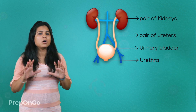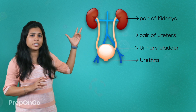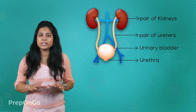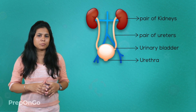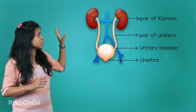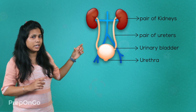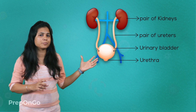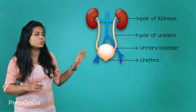First, all waste materials get collected into the pair of kidneys. These kidneys are located in the abdomen, one on either side of the backbone. The urine is produced in the kidneys, then transferred into the ureter, where it is stored in the urinary bladder. The urinary bladder then releases it through the urethra.